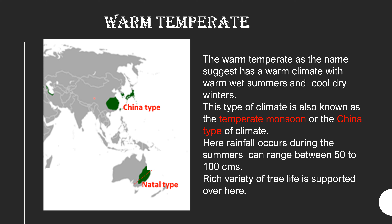Next we come to the warm temperate region. As the name suggests, it has a warm climate with warm wet summers and cool dry winters. This type of climate is also known as the temperate monsoon or the China type of climate. Here the annual rainfall can range between 50 to 100 centimeters.